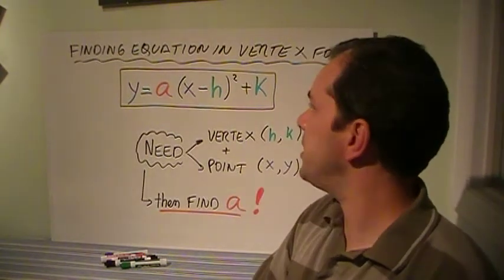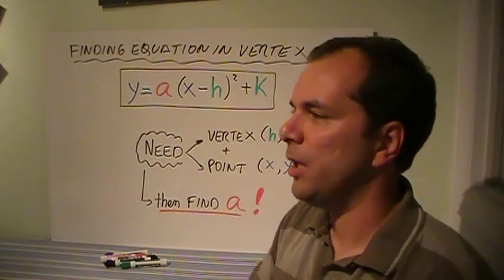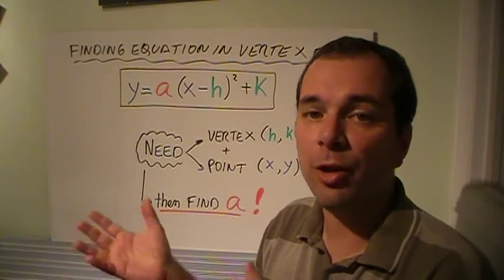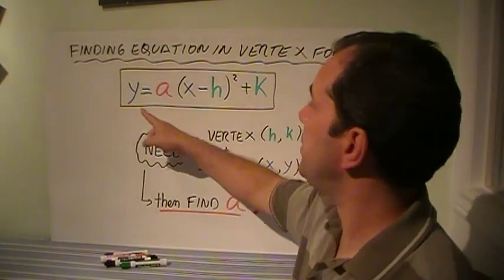So now that you know how to do these transformations, how do you find the equation if you're given the graph? The only way we can find the equation is if it's in vertex form.